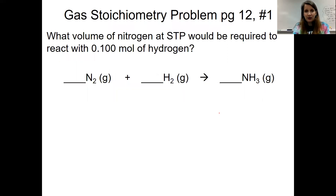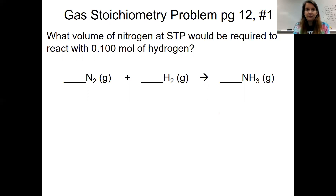We do stoichiometry when the question is talking about two different substances. This question on page 12, number one, is talking about two different gases: nitrogen gas and hydrogen gas. So we have to do a stoichiometry problem. Questions we've had up until this point we haven't had to worry about stoichiometry because we were dealing with the same sample of gas. Pay attention to the wording to know if you have to do stoichiometry or not. If you do, you need to have a balanced chemical reaction.